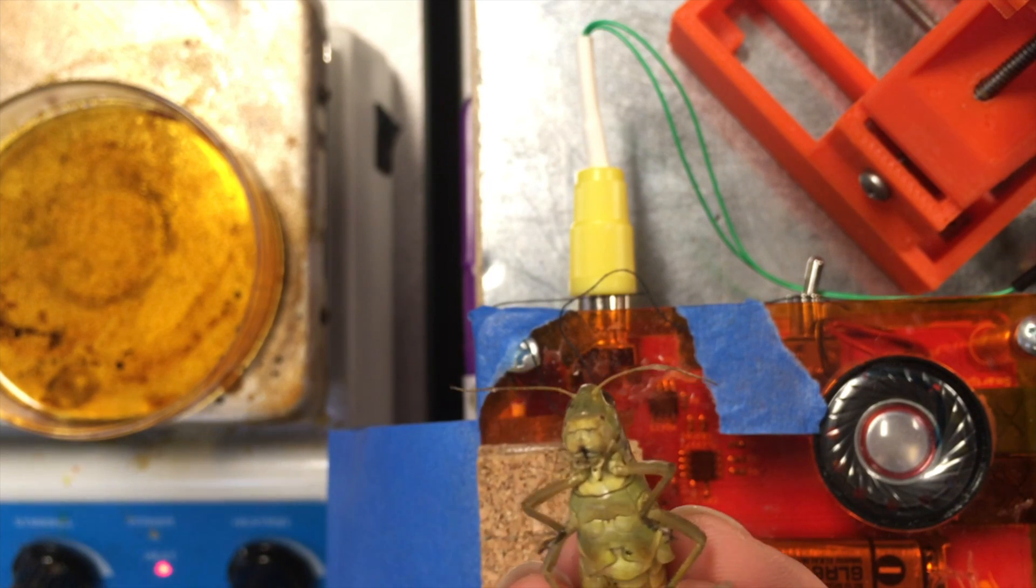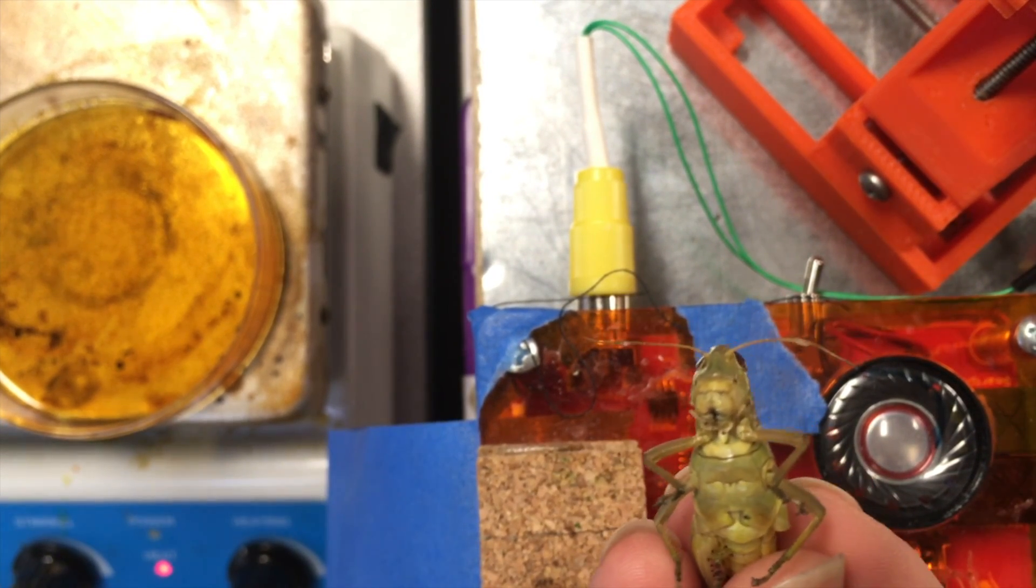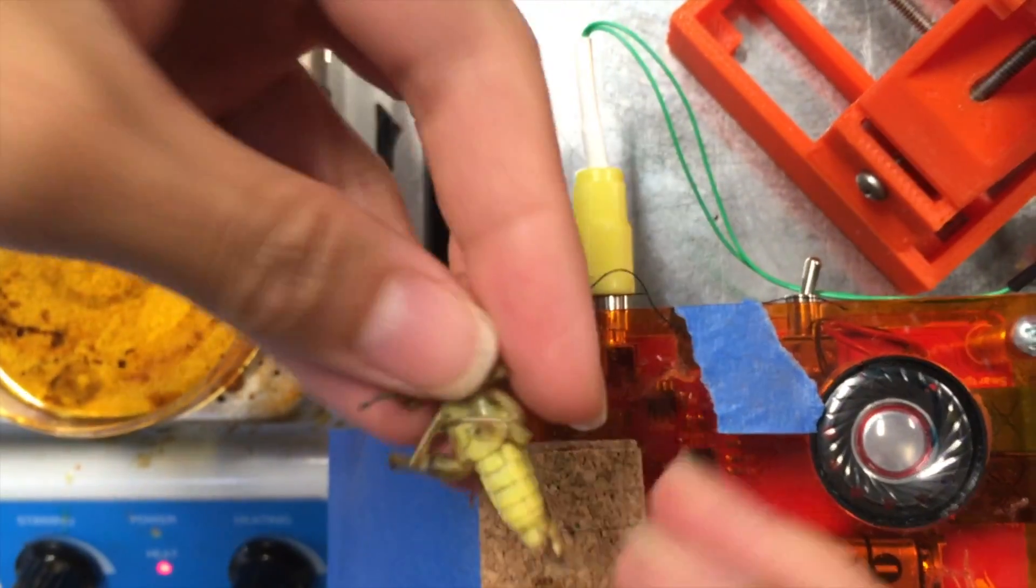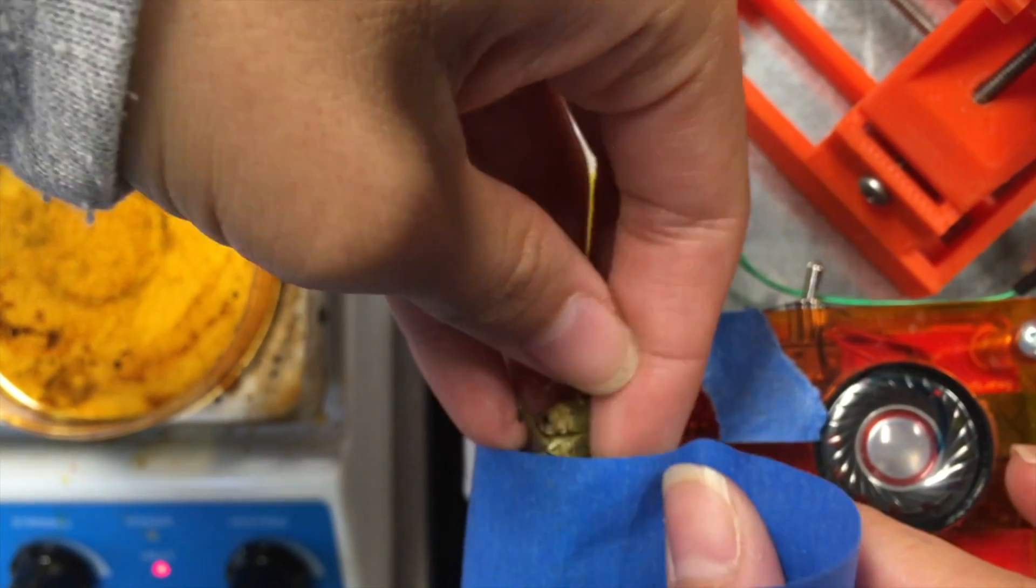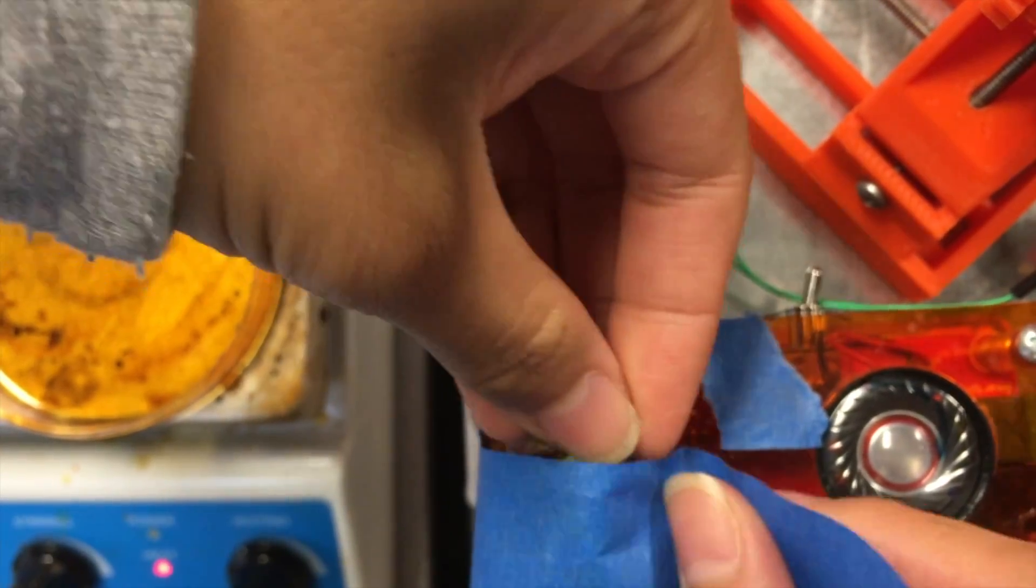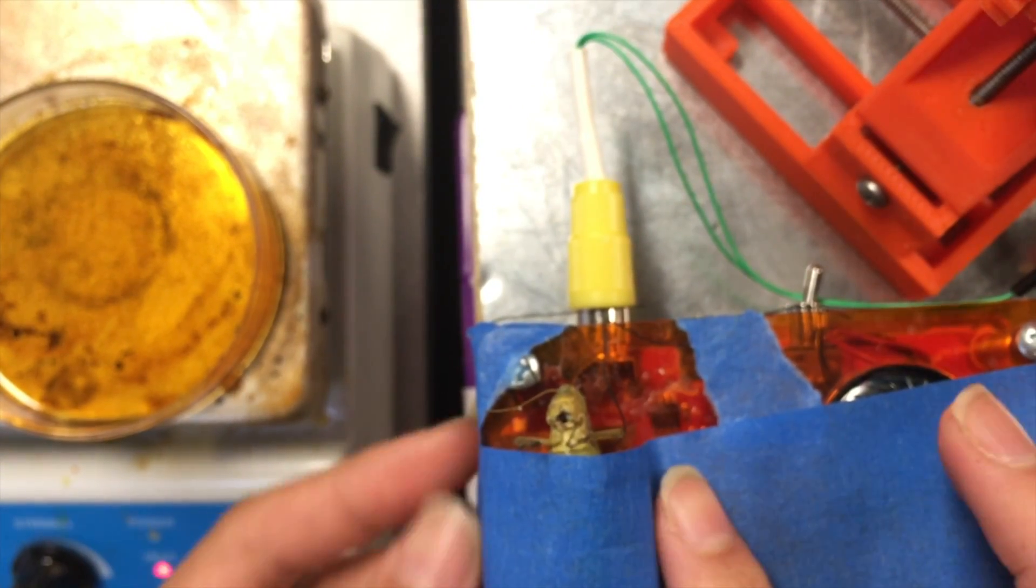Here I have a grasshopper caught here in Ann Arbor. It's anesthetized in the fridge for 15 minutes. So now we're going to tape it down on the corkboard piece on the spiker box, exposing the head and a little bit of the thorax where we will be placing the electrodes.